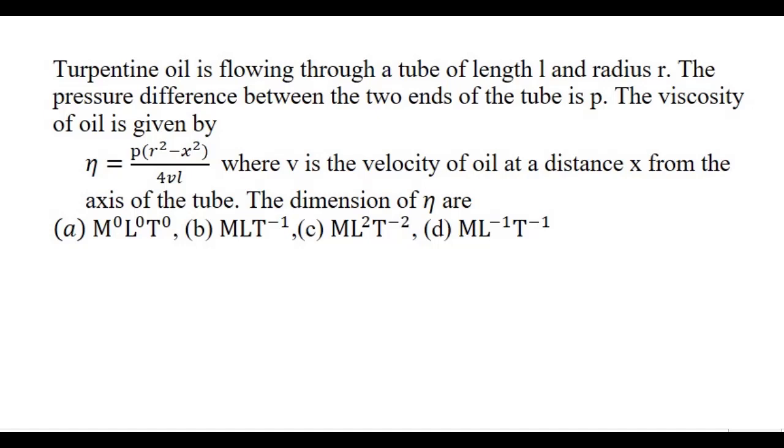Turpentine oil is flowing through a tube of length l and radius r. The pressure difference between the two ends of the tube is p. The viscosity of oil is given by eta equals p(r² - x²)/(4vl), where v is the velocity of oil at a distance x from the axis of the tube.